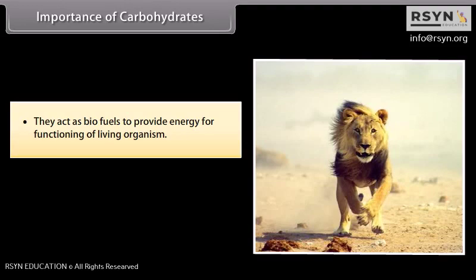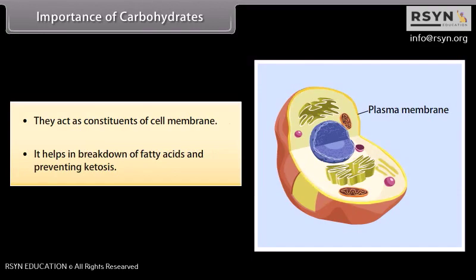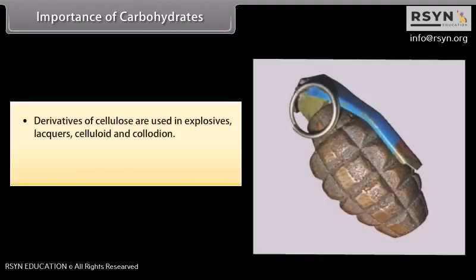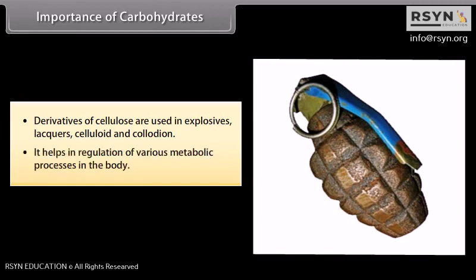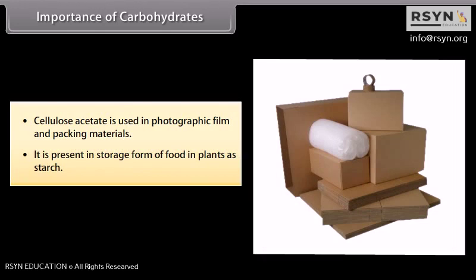Carbohydrates act as biofuels to provide energy for functioning of living organisms. They act as constituents of cell membrane and help in breakdown of fatty acids, preventing ketosis. Derivatives of cellulose are used in explosives, lacquers, celluloid, and collodion. They help in regulation of various metabolic processes in the body. Cellulose acetate is used in photographic film and packing materials. Carbohydrates are present in storage form of food in plants as starch.